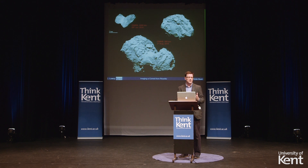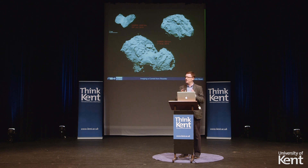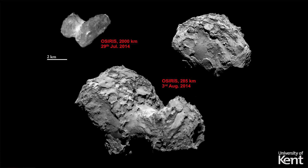It didn't take long to start sending back very detailed images of the surface, and every time an image came back on a daily basis we were just in awe of what was coming back — in particular the detail on the surface. These are a sequence of images from anywhere between 2,000 to about 300 kilometres from the centre of the comet. You can see a very striking, bizarre world covered in a range of features from pits to craters, boulders all over the surface, and towering cliffs — all of these things were new to us.